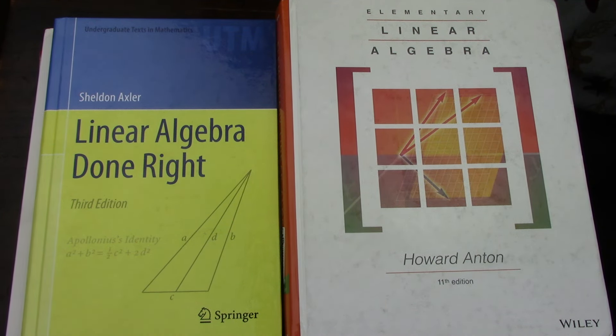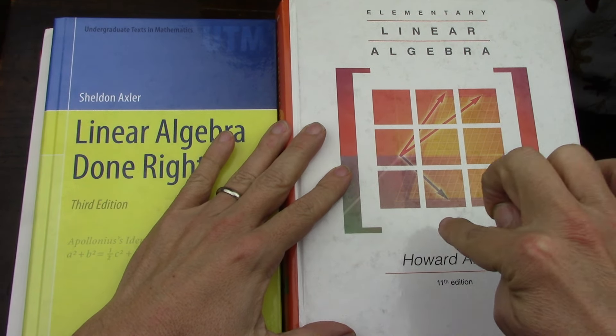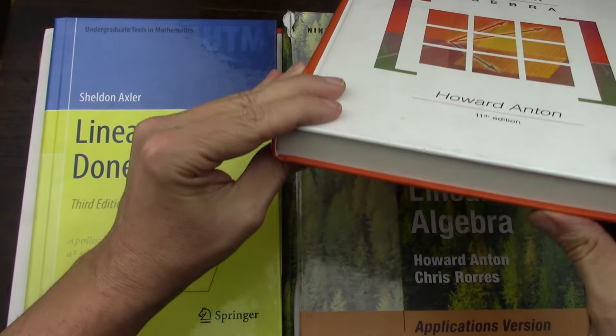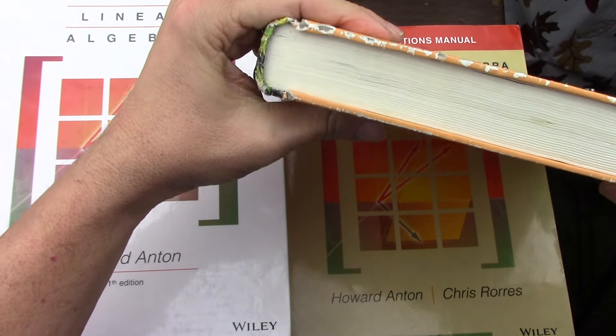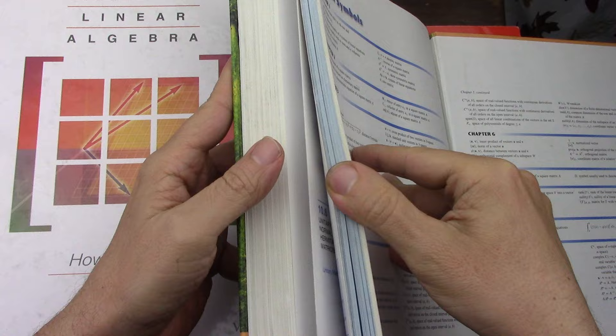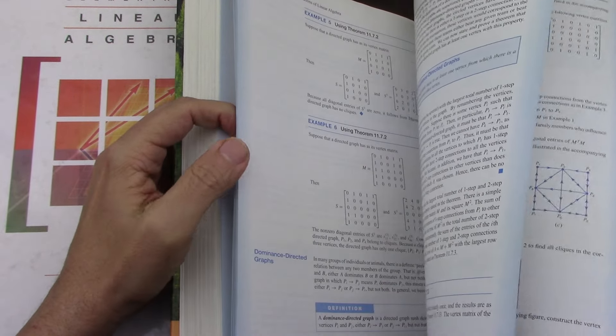I wanted to show the linear algebra books that I've considered, but also the one that I'm definitely going to use. It's going to be Anton's 11th edition Linear Algebra without the extra stuff, so it's the thinner version. I actually have the one that's got all the extra what I call the application chapters. It's really good, it's got a lot of examples.